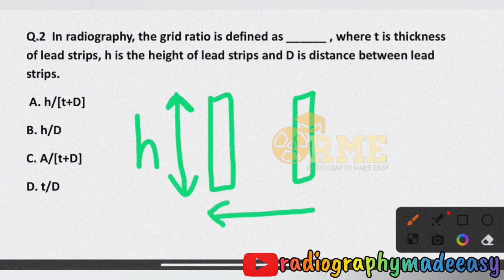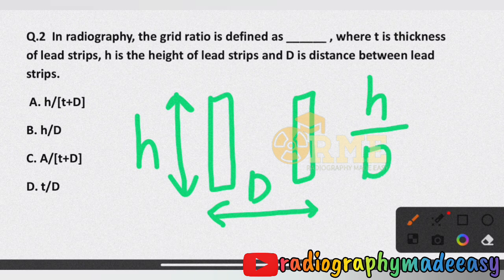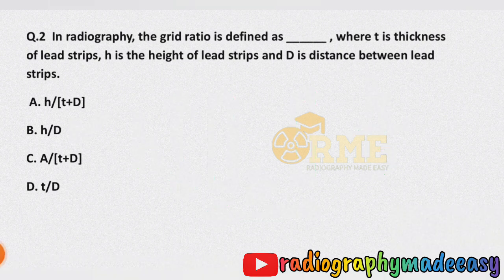The grid ratio is defined as the ratio of the height of a lead strip to the distance between two lead strips, that is H by D. So the correct answer is option B, H by D.